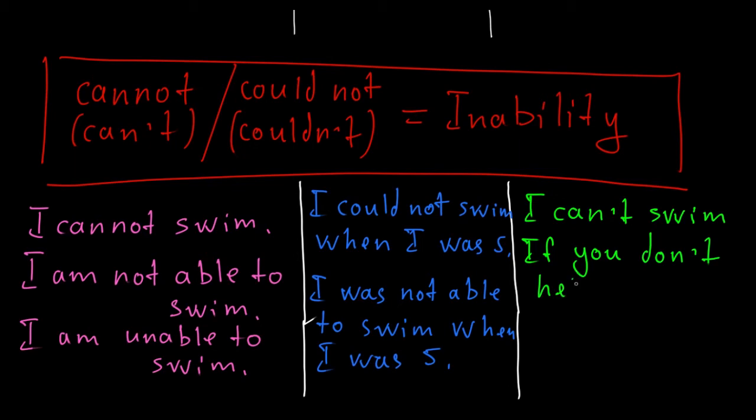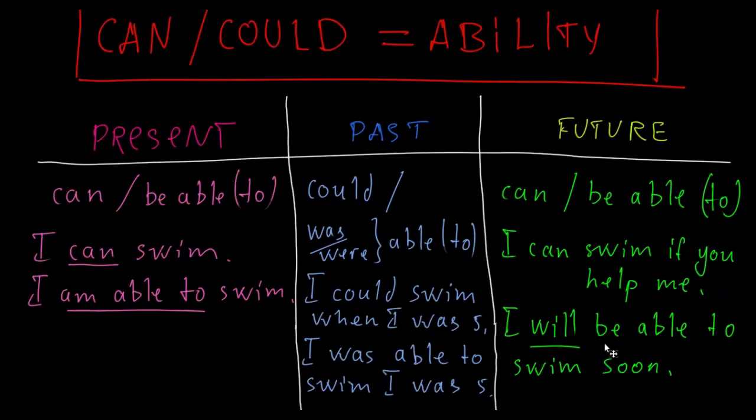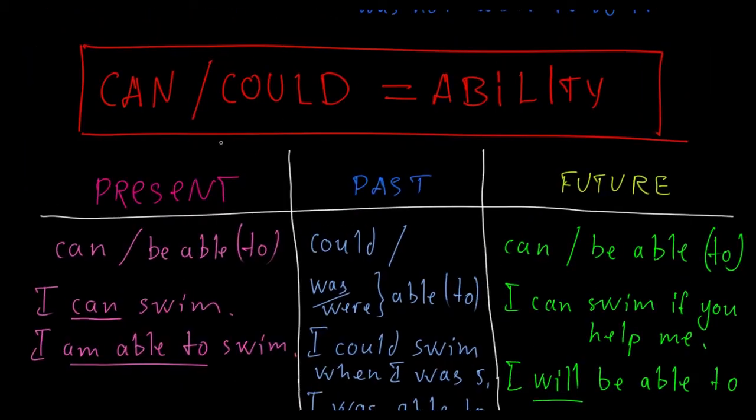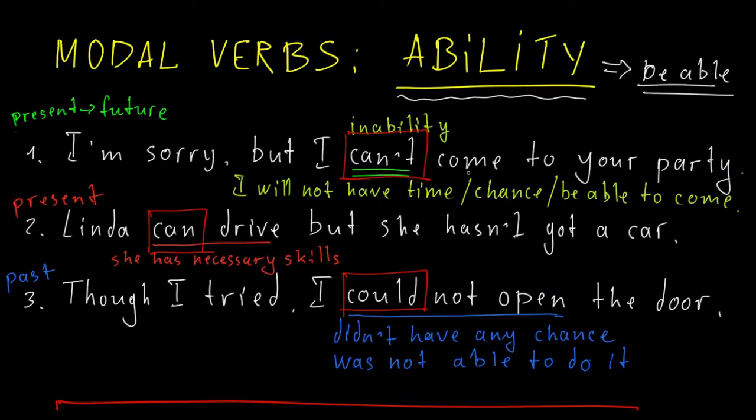It's all about ability and inability. As you see, we use can, could, able to, or be able to, to be exact, and its negatives, to express inability. And that's all for now. Thanks for watching. Please leave your comments. Please subscribe. Like or dislike. Share or whatever. Thanks for watching again. And see you in the next video.